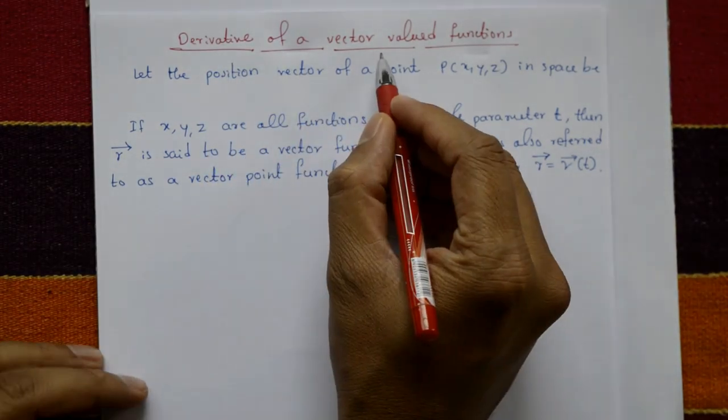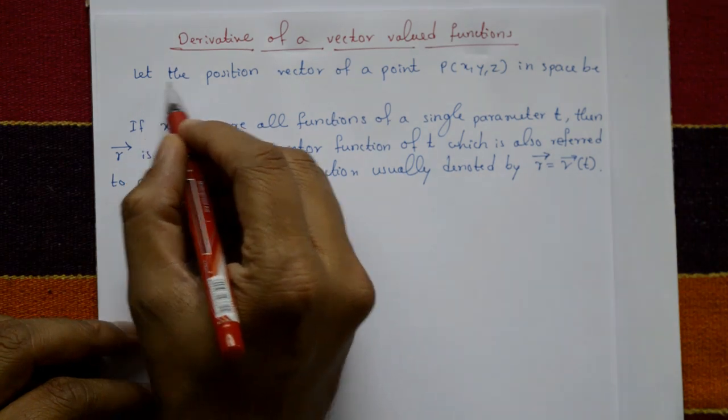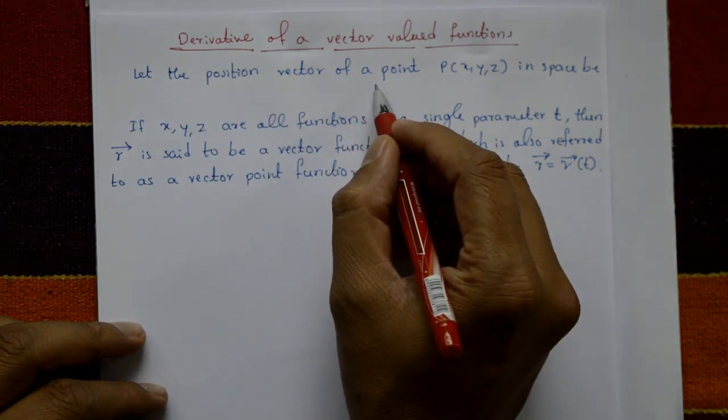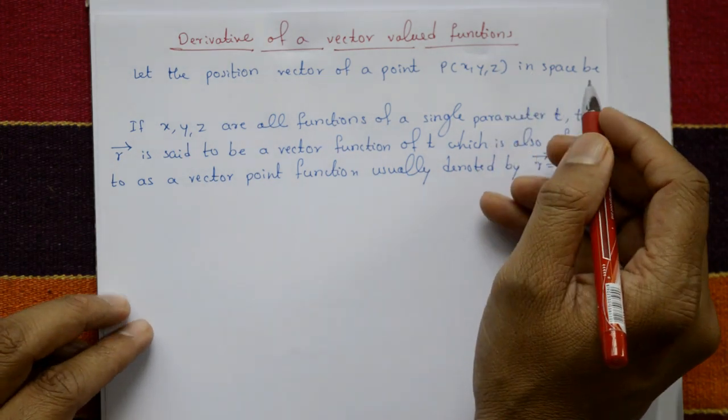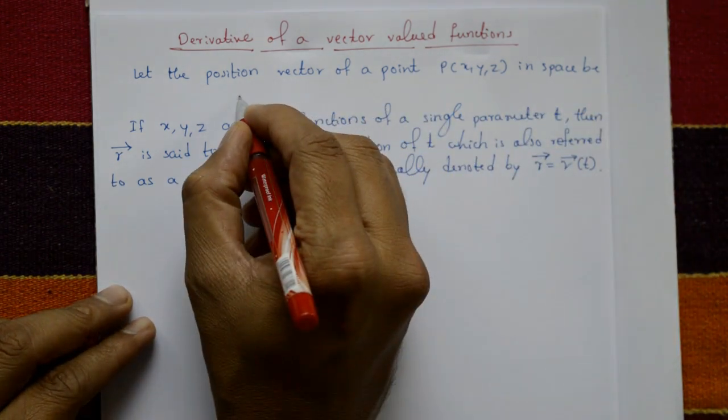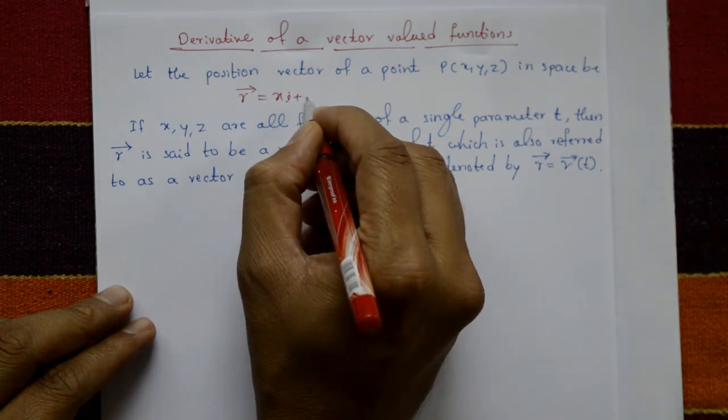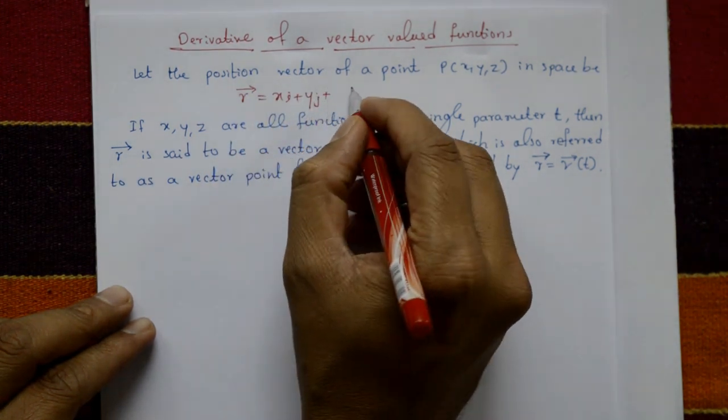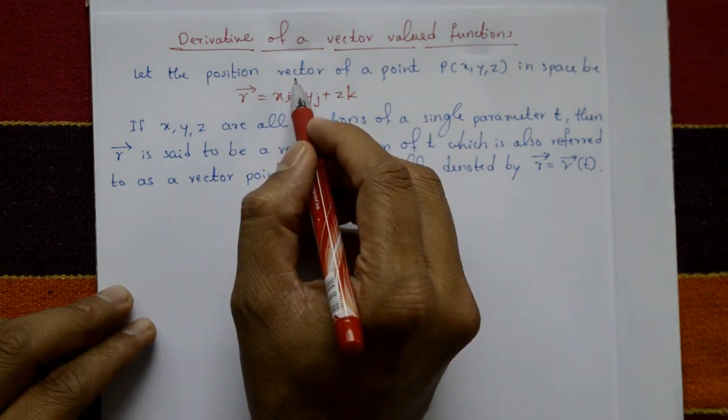Derivative of a vector valued function. Let the position vector of a point P(x,y,z) in space be vector r = xi + yj + zk. A vector is a quantity having both magnitude and direction.